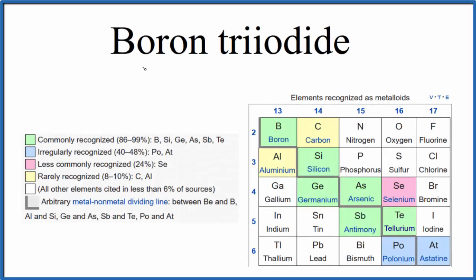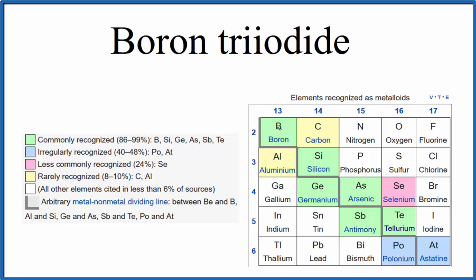To write the formula for boron tri-iodide, the first thing we need to recognize is boron — that's a metalloid, one of the commonly recognized metalloids. The iodide, that means iodine, and that's a non-metal.